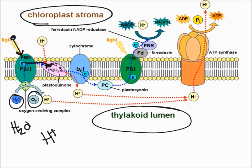The electrons are passed along through the chain, and then at Photosystem 1, light strikes the photosystem, the electron is excited, and the electron goes up and converts NADP+ into NADPH by binding with hydrogen to turn into NADPH.